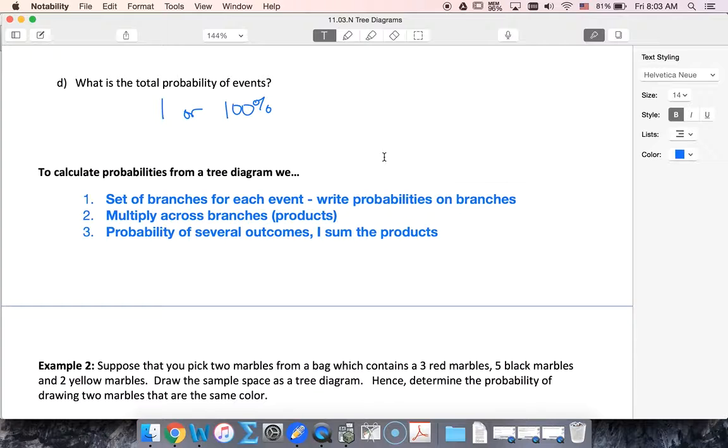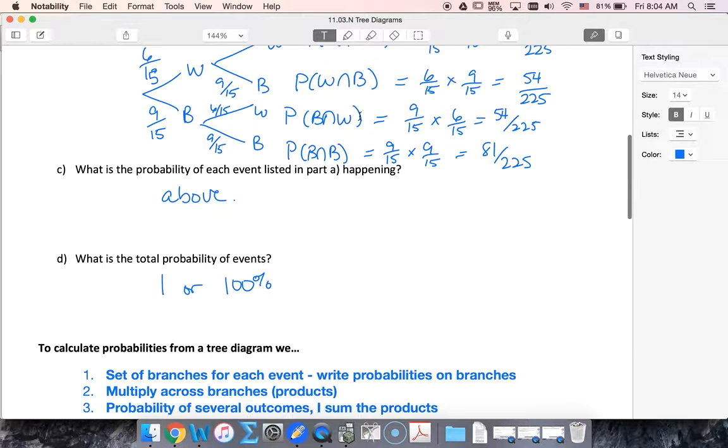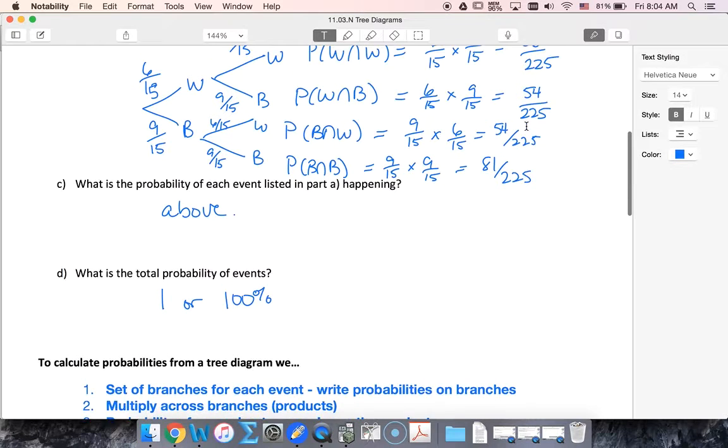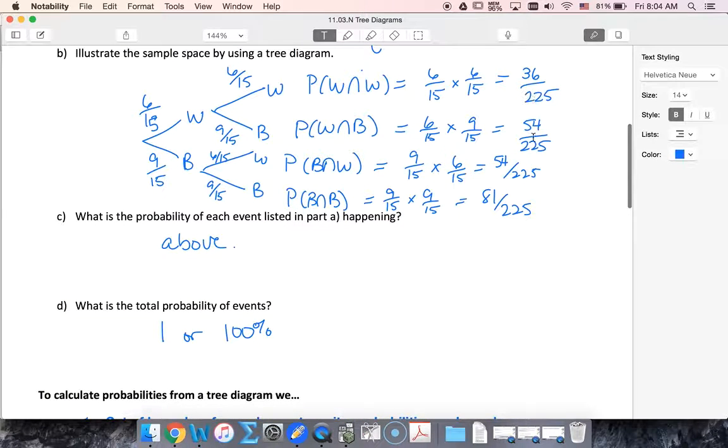So if I wanted to know the probability of getting white and a black in any order, I would take my fifty-four out of two twenty-five plus fifty-four out of two twenty-five. So if I want to know several outcomes, I add these up. So we multiply across the branches and we sum going down the products.